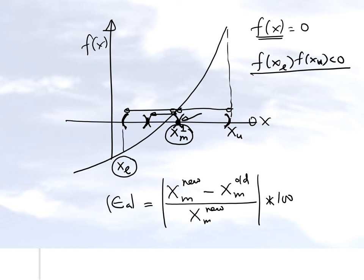You will also have an upper limit on the number of iterations you'll go through, because it's quite possible that convergence may be slow. In fact, the bisection method does generally converge slowly. But one of the good things about the bisection method is that convergence is guaranteed, because you have already bracketed the root. The only thing you have to wait for is how fast it is going to zero in on the root of the equation.